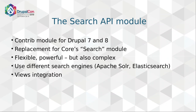It gives you complete search functionality, just much more powerful and flexible than the core search module. But powerful and flexible as usual means also more complex, which is why I'm standing here telling you how to set it up — it's a bit hard to figure out for newcomers. With the Search API you can use different dedicated search backends like Solr or Elasticsearch, as well as the normal database for searching, and it comes with great Views integration.